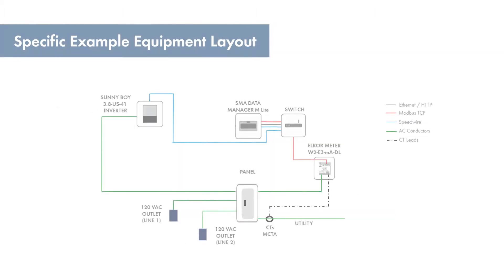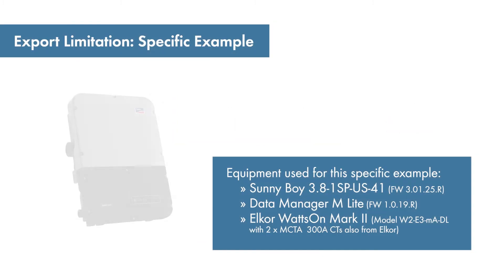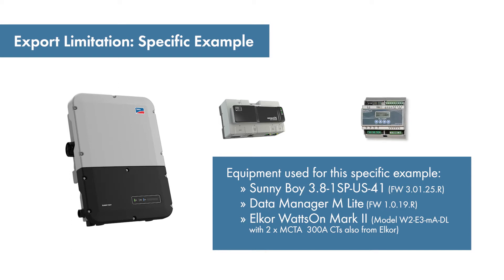In this video, we will demonstrate the setup for zero export in a residential US household with a 240 volt AC split phase 60 hertz utility service. The core components are a Sunnyboy 3.8 US-41 PV inverter, SMA Data Manager M Lite, and Elcor Wattson Mark II Modbus TCP meter.